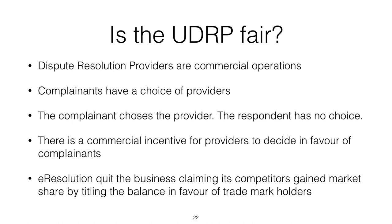The only protection against the system evolving this way would be if domain name holders had recourse to the courts — so if UDRP decisions were consistently being overturned by the courts, that might be a sign that something was wrong. But domain name owners can't appeal to the courts; they are required to be bound by the decisions of the UDRP providers. If the UDRP system were to drift too far, trademark owners would still have the option of going to court, but domain name owners can't.